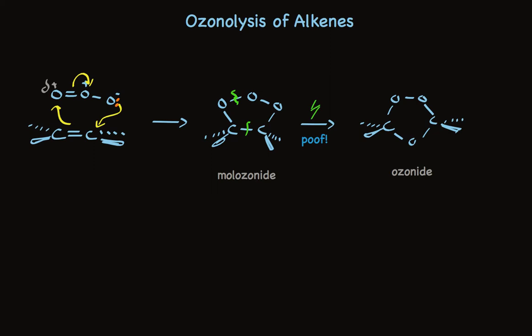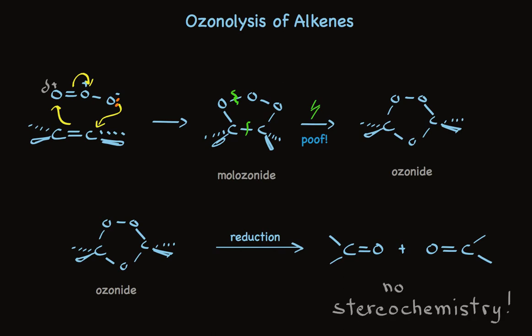In the second step, after the reducing agent has been added, the ozonide breaks apart to form the carbonyl groups. And I have some very good news for you. There are no stereochemical implications in this reaction. Even if we have E or Z stereoisomers in the alkene, that bond is cleaved and that stereochemistry is lost.